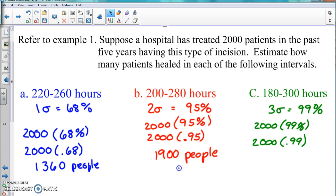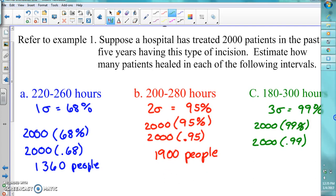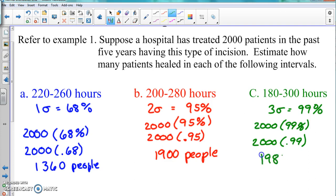So 1900 people are healed in this part. For the last one, we get 1980, so 1980 people are healed from 180 to 300 hours. That's only about 20 more people that need to heal, so that's the leftover stuff, the outliers, the extreme stuff.